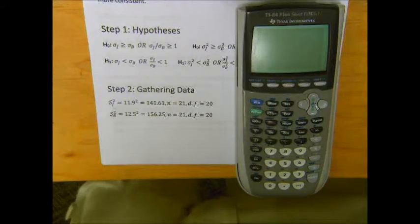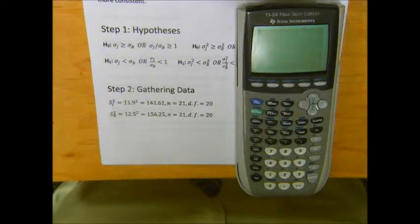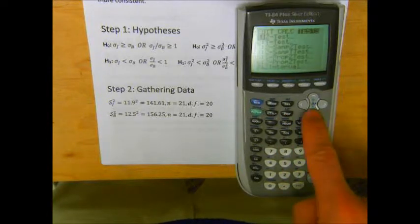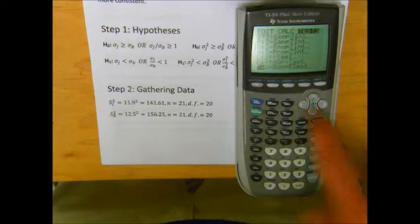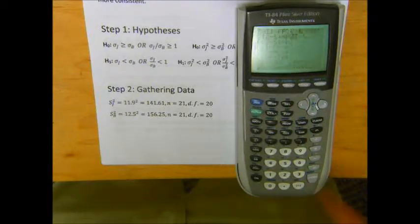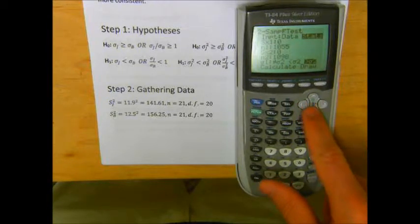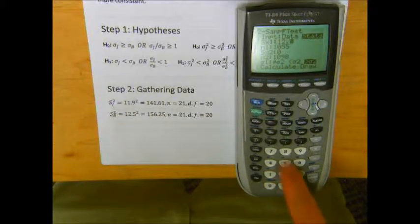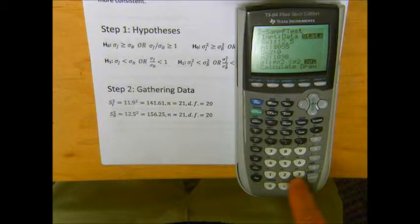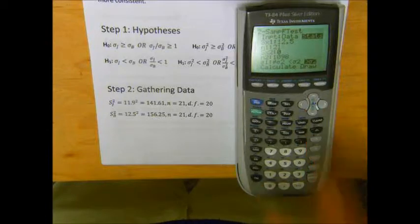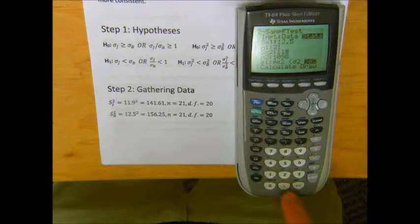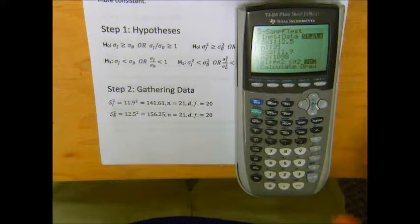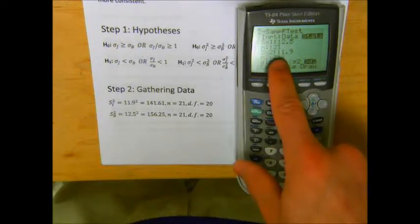Let's learn how to do this on the calculator. To perform a two-sample test for variances, we're using an F distribution. We want to go into Stat, Tests, and scroll down to our two-samp F test at option E. First, we enter the sample standard deviation of the first observation, the one that's larger, 12.5. The sample size here was 21. We enter the second sample standard deviation, the smaller one, of 11.9. Remember, the calculator wants the sample standard deviations here. If you put in the variances, the test will be wrong. We also had a sample size of 21 for the second sample.